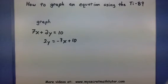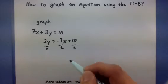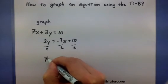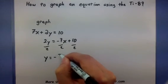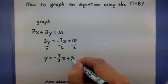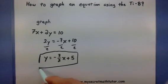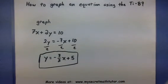And to get the y completely all by itself, I'll divide everything by 2. This will give us that y is equal to negative 7 halves x plus 5. So this is what we will actually enter into our calculator. So let's go ahead and grab it right now.